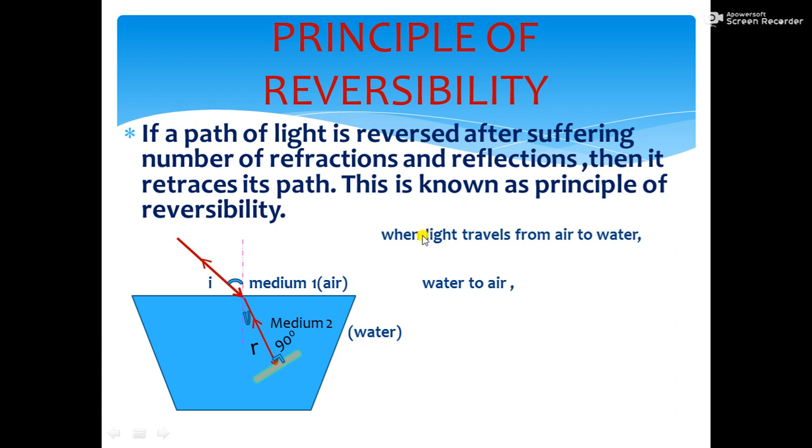Consider first case, when light travels from air to water. According to Snell's law, the refractive index mu is equal to sin i by sin r. In this case, the refractive index of medium 2 with respect to medium 1 is sin i by sin r. i is the angle of incidence and r is the angle of refraction.